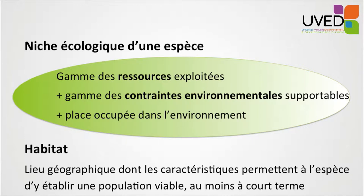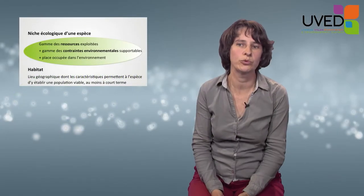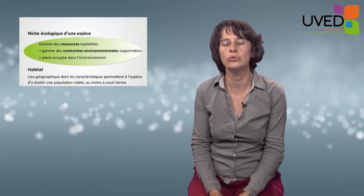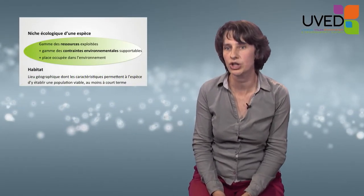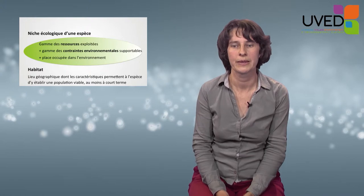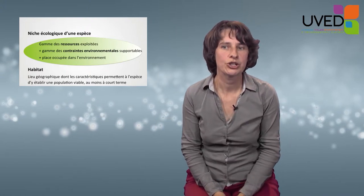The ecological niche combines a range of exploited resources — what the species eats as prey — a number of environmental constraints that it can stand, such as maximum or minimum temperatures, and the role played in the forest: where it can be found on the ground, on trunks, in branches, or in high branches.